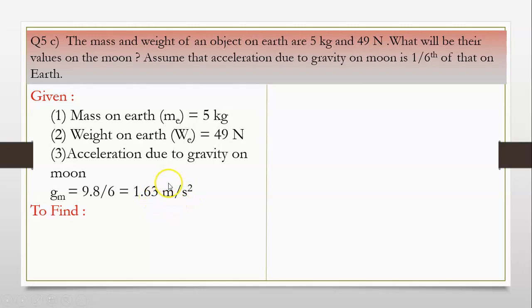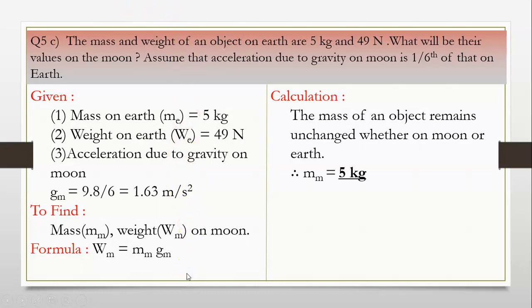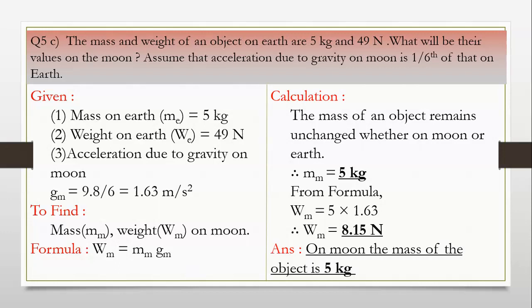Now, what we have to find? We have to find their values on moon: mass mm and weight Wm on moon. Formula: Wm is equal to mass mm into gm. Calculation. The mass of an object remains unchanged whether on moon or Earth or anywhere in the universe. So the mass of the object on moon is 5 kilograms. From formula, Wm is equal to 5 into 1.63. Therefore, Wm is equal to 8.15 newtons. Answer: on moon, the mass of the object is 5 kg and weight is 8.15 newton.